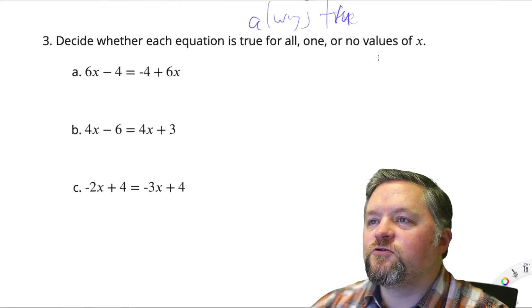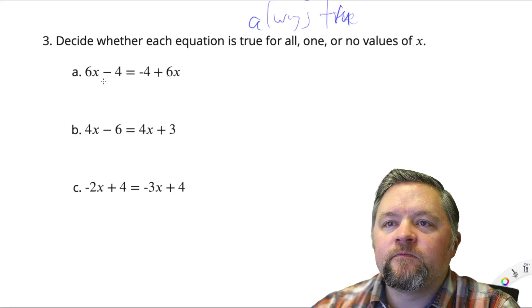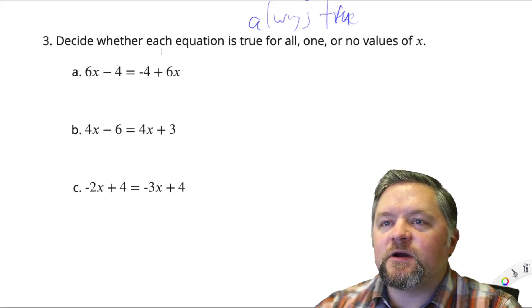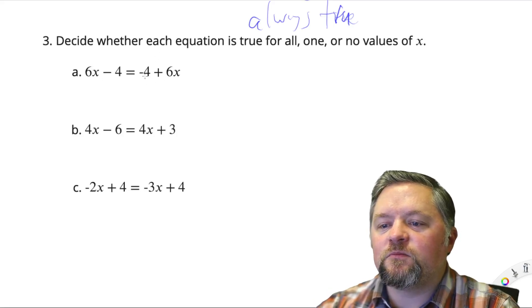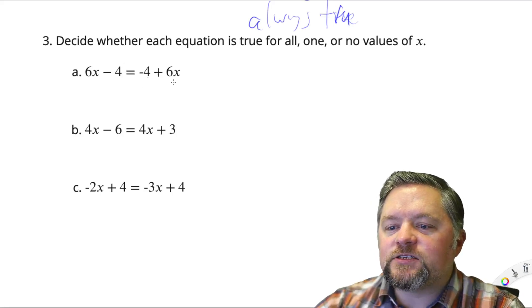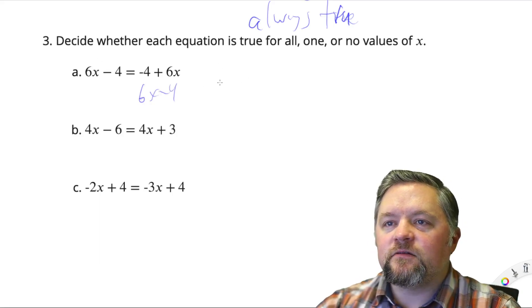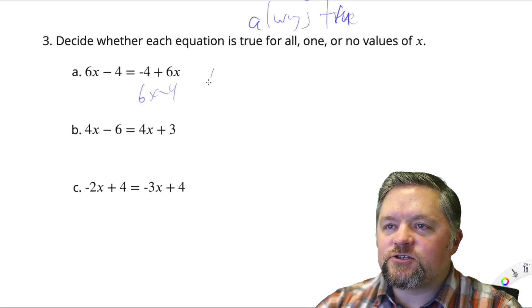Decide whether each equation is true for all, one, or no values of x. So here I have 6x minus 4 and negative 4 plus 6x. This could be written if I swap the sides as 6x minus 4, and then each side is identical. If each side is identical, that's true for all.